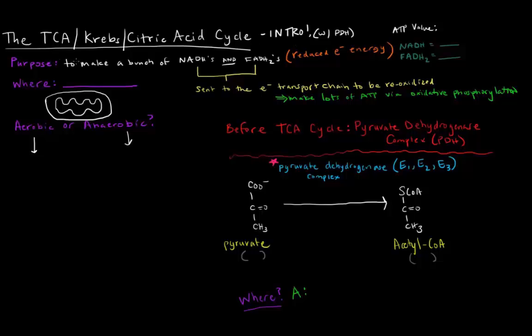What is the purpose of the TCA cycle? Basically it's to make a bunch of NADHs and FADH2s. If you recall, NADH is the reduced form of NAD+, and FADH2 is the reduced form of FAD. So both of these are carrying electrons, and that is basically stored energy, that's reduced electron energy.